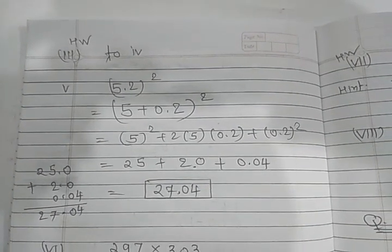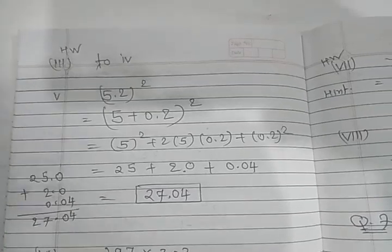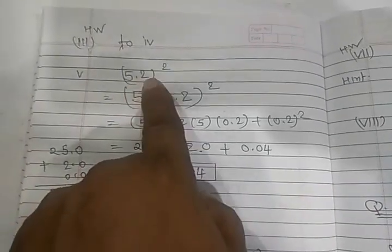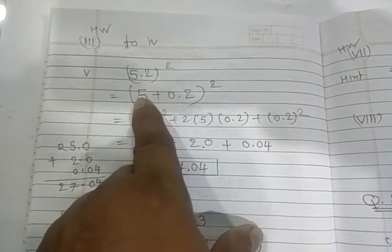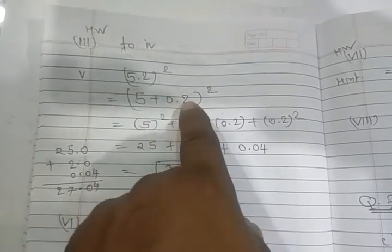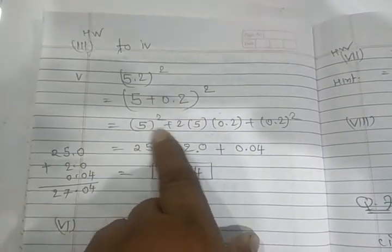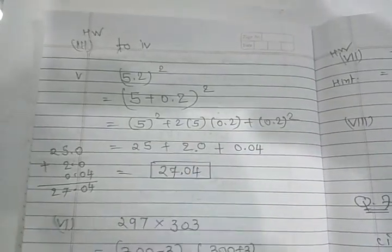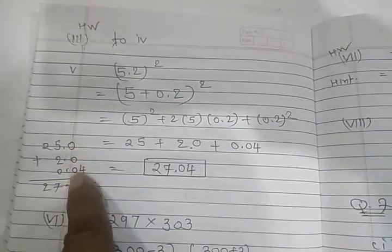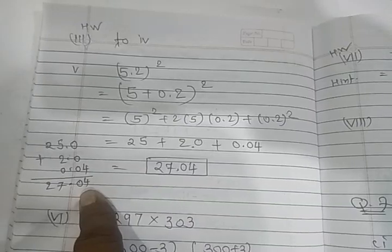Third is homework, four is also homework. Third two, four, five point two whole square. Agar aisa hai toh kya karenge? Five plus zero point two means five point two whole square karo. Aapka ye aapka bhi a plus b whole square se aap kar sakte ho. Pura yaha add bhi kaisa karna hai, here I am showing you.